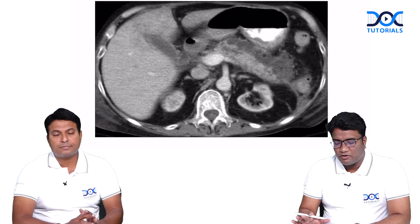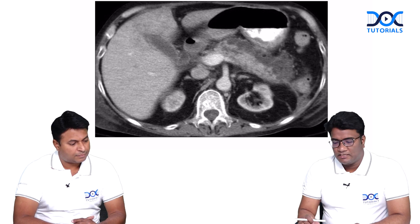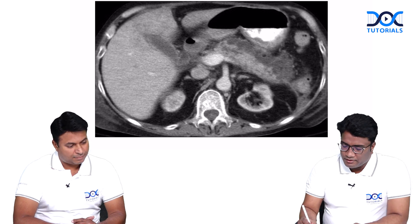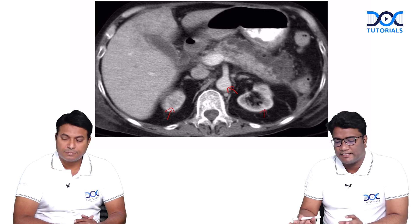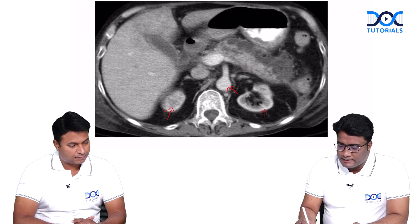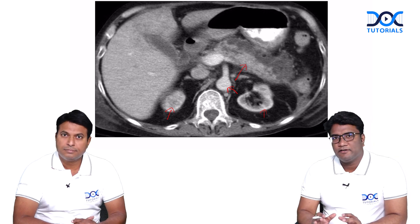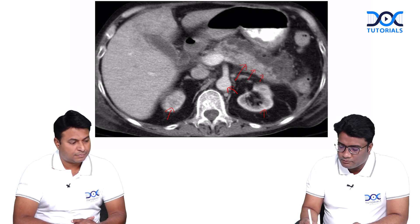This is the contrast enhanced CT scan image obtained on the fourth day of admission. If you look at the image carefully, this is a contrast CT — you can see the contrast in the aorta and enhancement of the kidneys. This is an axial CECT image, and this area here is the region of the pancreas. Look at the pancreas carefully: you see some nicely enhancing areas, but at the same time you also see some non-enhancing areas in the pancreas.